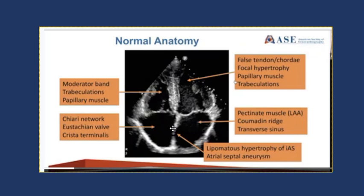In addition, you can have an aneurysm of the interatrial septum, where the septum is excessive and floppy, flopping more than one centimeter in either direction into the left or right atrium. Sometimes when I note this on an echo report we get calls from the medicine team not sure what it means, and we reassure them this is a normal variant. There is sometimes an increased association with septum secundum ASDs or PFOs, but it is usually of no significant clinical significance.